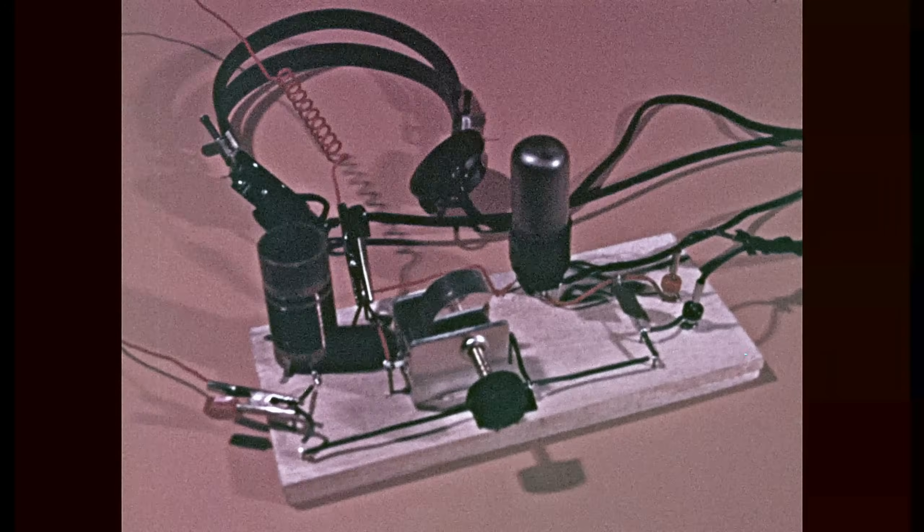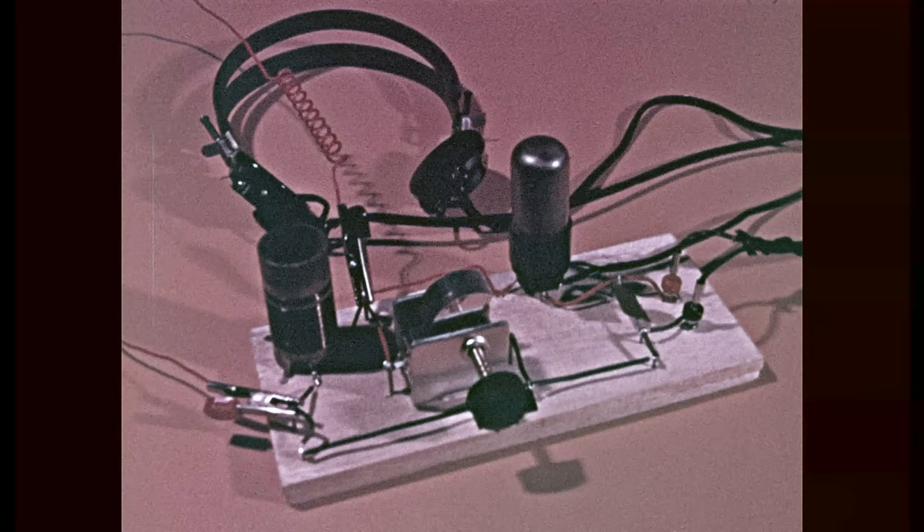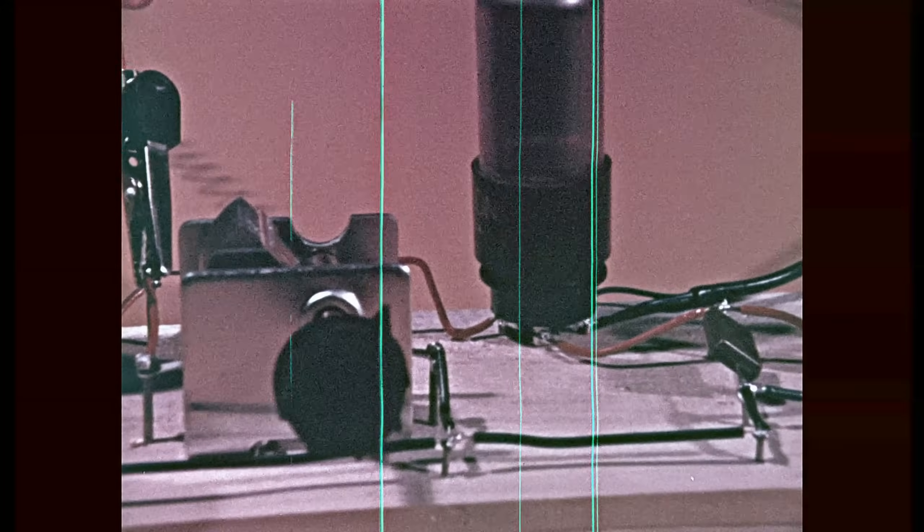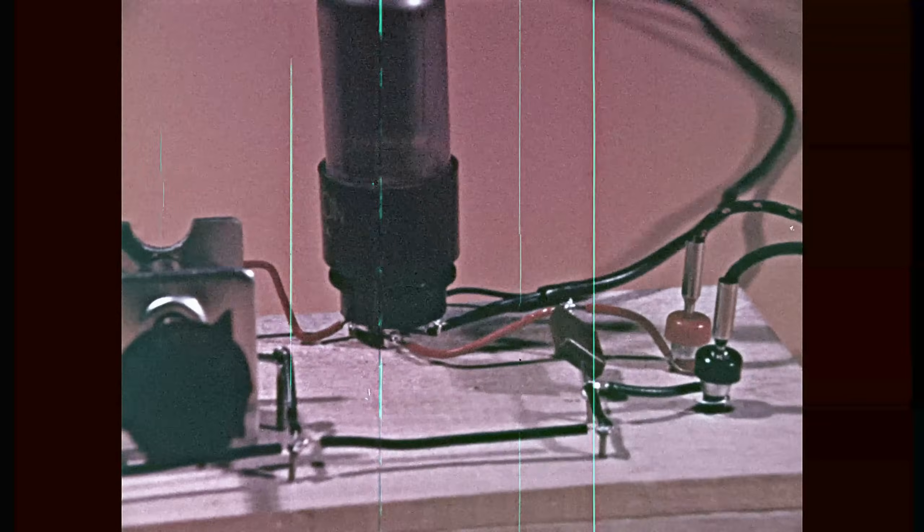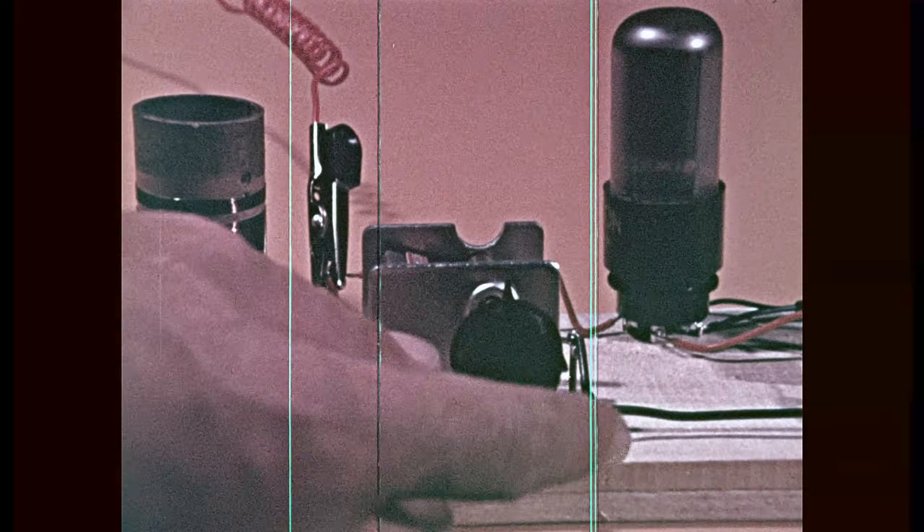As vacuum tubes were developed, they were used in place of crystals and produced a stronger signal. Then the antenna tuning circuit was improved by adding more coils and capacitors, so that the frequency of more than one station could be selected and fed to the vacuum tube.